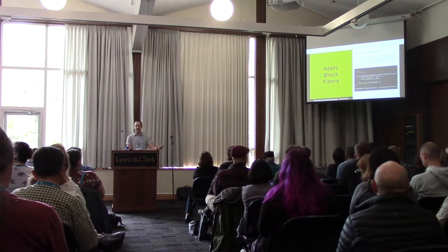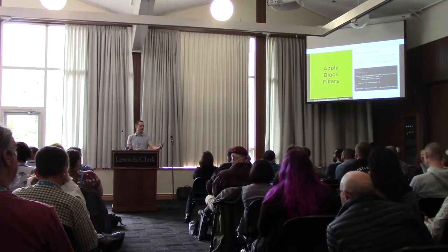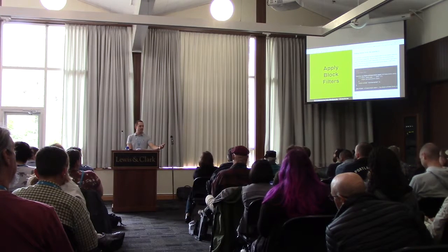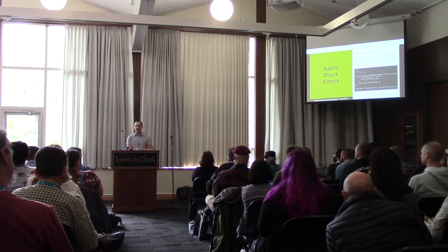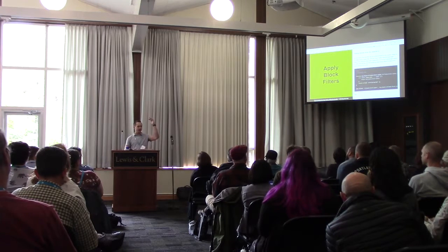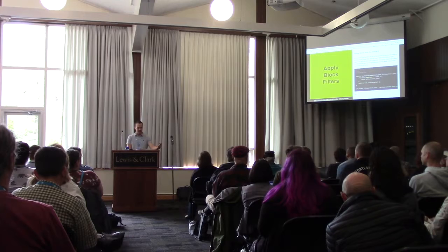You can also apply block filters. Maybe I have a finance blog and it makes sense on certain post types to have a data visualization block. Or I have a recipe blog — if I create a block for ingredients, does it make sense to have that in a team members post type? Probably not. There's a filter for that, so you can determine what blocks show up on what post types. Rather than have a big list your users have to figure out, you can make that more restrictive and give them some guardrails.